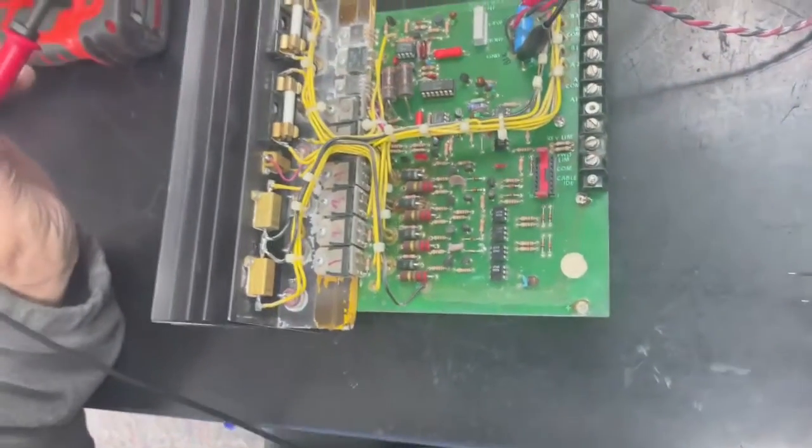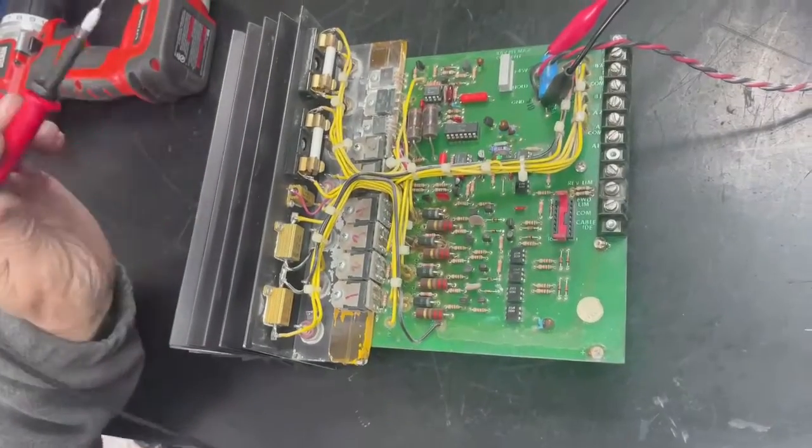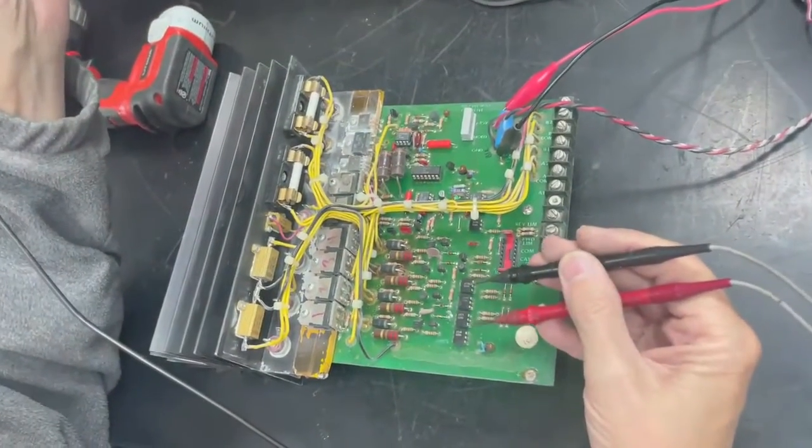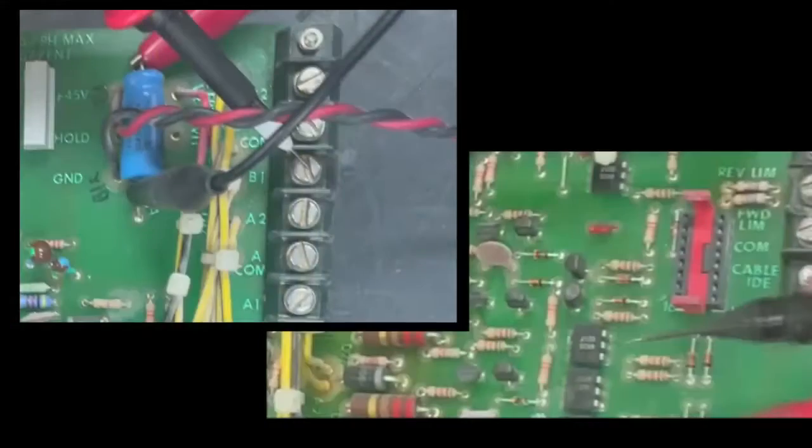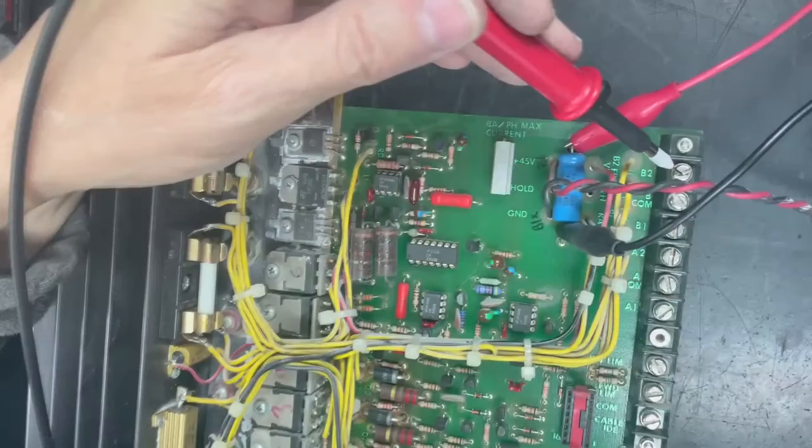We are going to confirm whether or not this amplifier is operating. These are the inputs to run each side. So B1 has a corresponding IC, B2 has a corresponding IC.